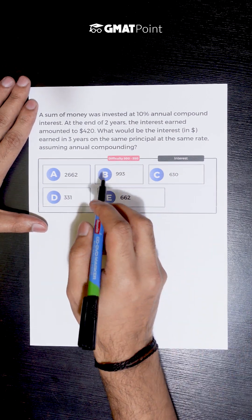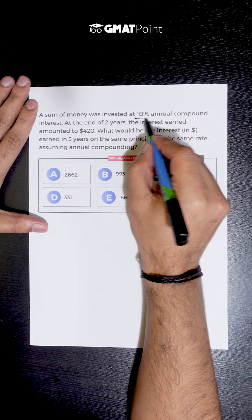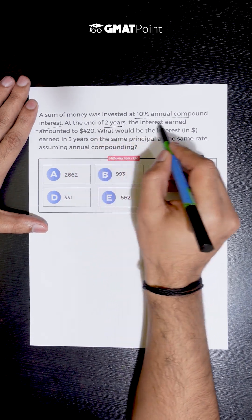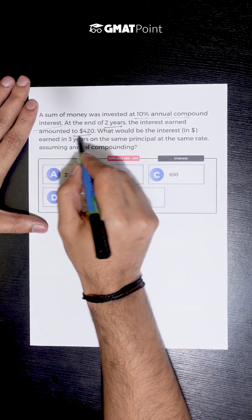Let us see how to solve this question. A sum of money was invested at 10% annual compound interest. At the end of two years, the interest earned amounted to $420.